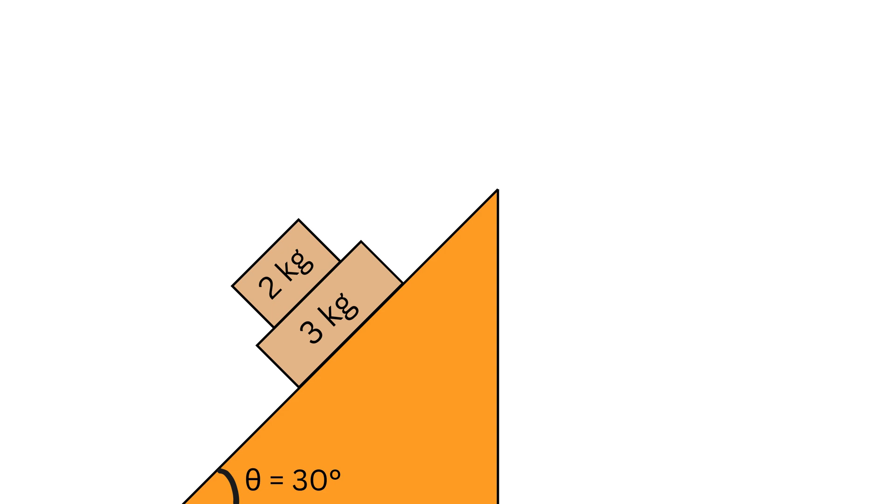We have two blocks on a 30-degree inclined slope. The top block, small m, is 2 kg and the bottom block, capital M, is 3 kg. A force F of 20 N is pushing the top block up the slope like this. The bottom of the large block is frictionless, meaning there is no friction between the incline and the bottom block.